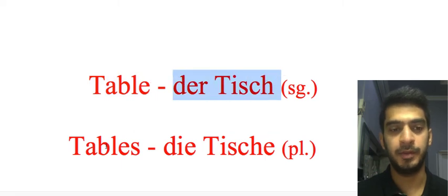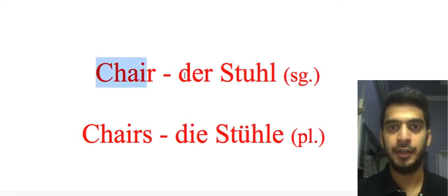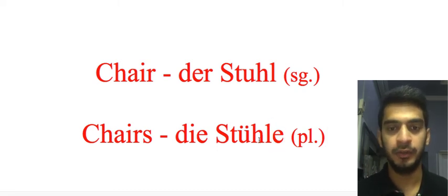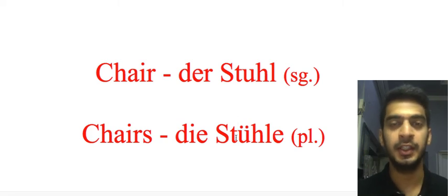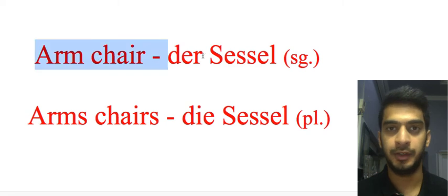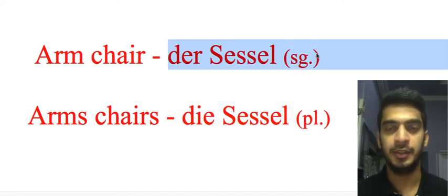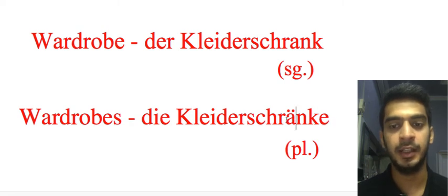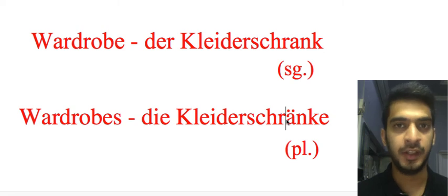'Table': 'der Tisch' — singular; 'die Tische' — plural, extra E at the end. 'Chair': 'der Stuhl' — singular; 'die Stühle' — plural, extra E and U with umlaut. 'Armchair': 'der Sessel' — singular; 'die Sessel' — plural. Both words are completely the same. 'Wardrobe': 'der Kleiderschrank' — singular; 'die Kleiderschränke' — plural, extra E at the end and A with umlaut.